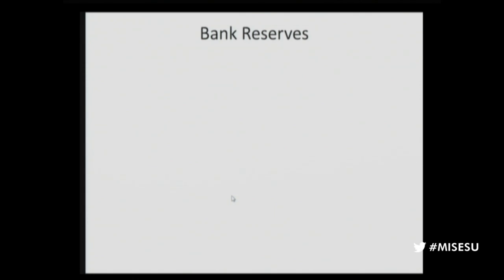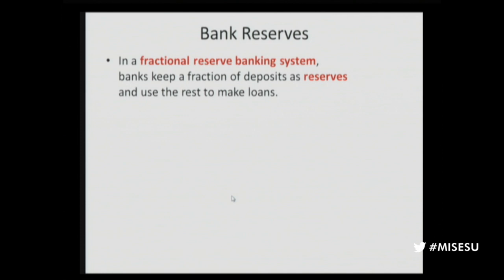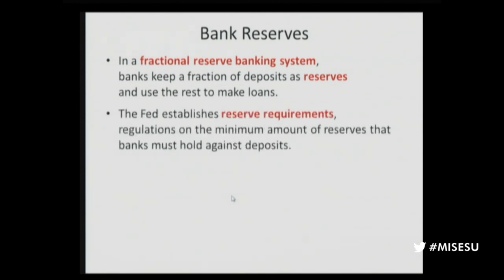In a fractional reserve banking system, banks keep a fraction of deposits as reserves. They don't hold the full amount — they hold some fraction: 80%, 20%. In today's economy, the legal minimum is 10%, at least behind checking accounts. For savings deposits, the legal minimum is now zero; it used to be 3%. The Fed establishes reserve requirements — the legal minimum ratio of reserves to deposits. Banks may indeed hold more than the minimum amount, and today they do.